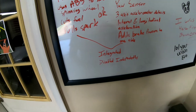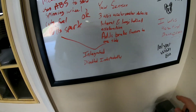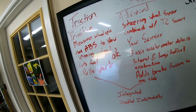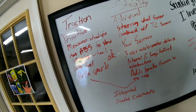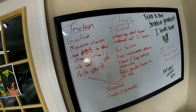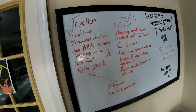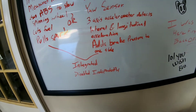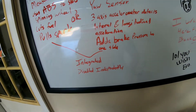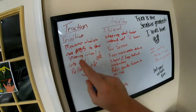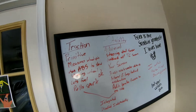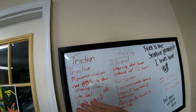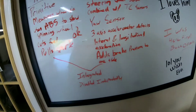One thing to realize is that nine times out of ten, if you turn your stability control off, it's not actually all the way off. But it does disable a huge portion of it, to where you do have a lot more control of the car. Now, when should you disable traction control or stability control?